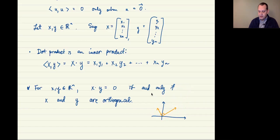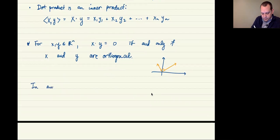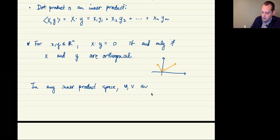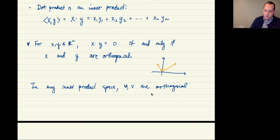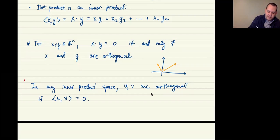We use this in any inner product space. In any inner product space, we say that u and v are orthogonal if their inner product is zero. So we'll use this as a definition for any inner product, generalizing the geometric picture from Rn.